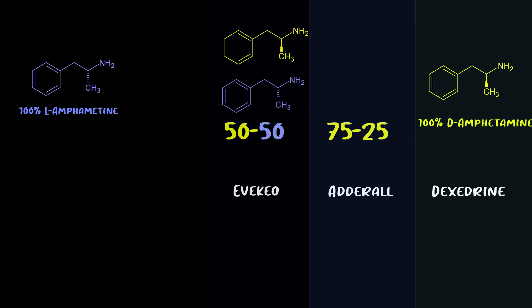All the other amphetamine-related drugs out there are basically these three drugs with different delivery mechanisms. The Adderall XR mechanism works by releasing 50% of the drug right away and then 50% four hours later, trying to mimic the effects of two doses of immediate-release Adderall given four hours apart. Pro tip: if your pharmacy ever runs out of Adderall XR, you can replicate it with two Adderall IR doses four hours apart — though everything said here is for informational purposes only.